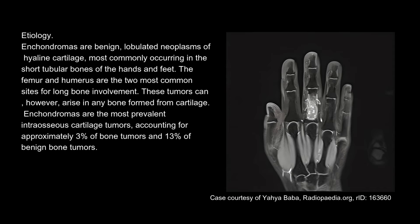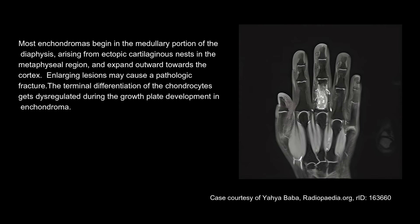Enchondromas are the most prevalent intraosseous cartilage tumors, accounting for approximately 3% of bone tumors and 13% of benign bone tumors. Most enchondromas begin in the medullary portion of the diaphysis, arising from ectopic cartilaginous nests in the metaphyseal region, and expand outward towards the cortex. Enlarging lesions may cause a pathologic fracture. The terminal differentiation of the chondrocytes gets dysregulated during growth plate development in enchondroma.